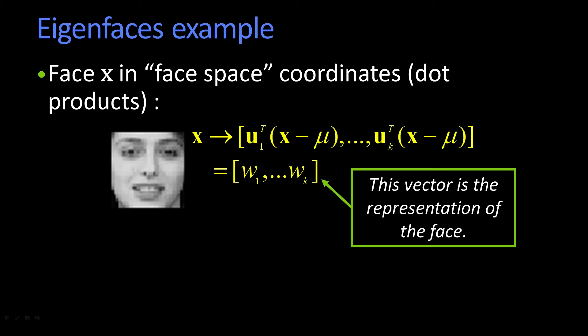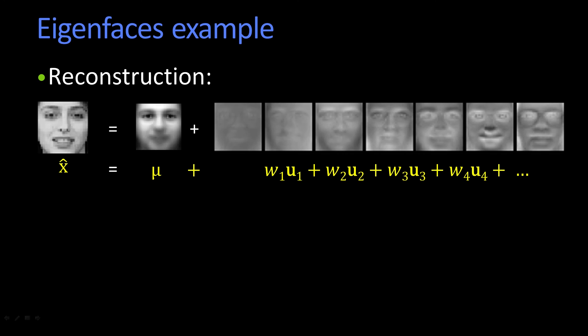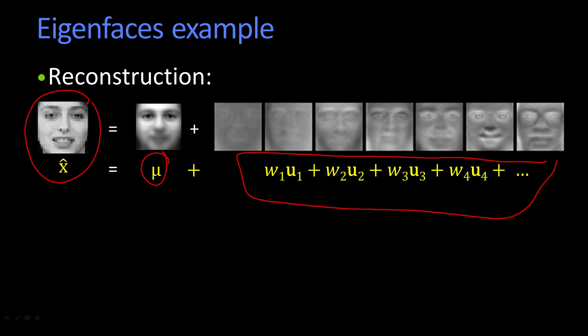I can actually use them to reconstruct the face. Each one of these w's tells me how much of each eigenvector to add back in. In general, what I can do is take a picture and say this picture is represented by the mean plus each of the w's times the eigenvectors — that's what this is. And if I were to keep a lot of them, I would get a really great reconstruction. If I keep some of them, I get an okay reconstruction.